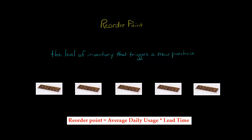In this video, I'm going to show you how to calculate the reorder point for inventory. The reorder point is the level of inventory that triggers a new purchase. It's the amount where, when you get down to this level, you say it's time to do another order. We have to buy some more inventory. We're running out.